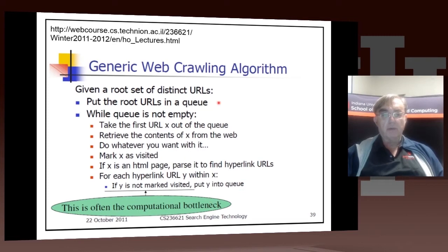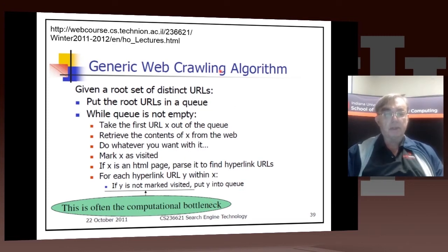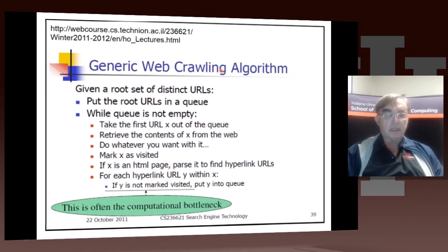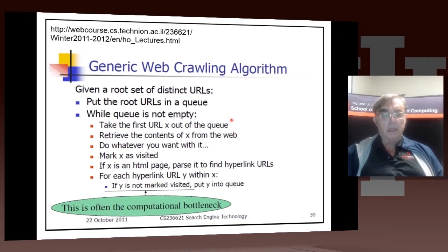A web crawling algorithm starts with a set of URLs which you want to crawl. It puts those URLs in a queue and then goes through this algorithm forever — and when it finishes, it starts again, because it wants to keep everything up to date.